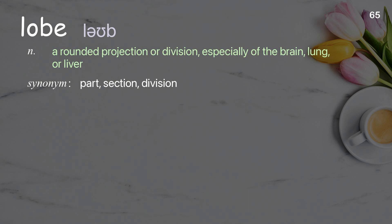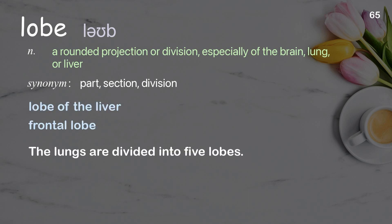Lobe: a rounded projection or division, especially of the brain, lung, or liver. Examples: lobe of the liver; frontal lobe. The lungs are divided into five lobes.